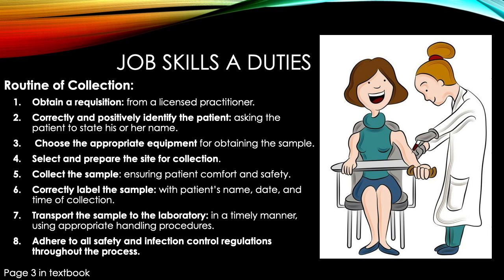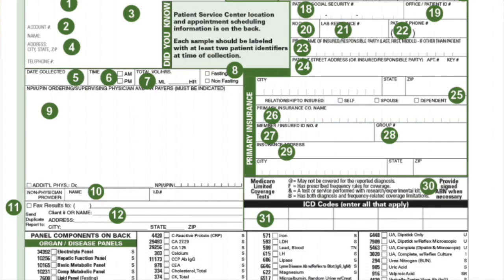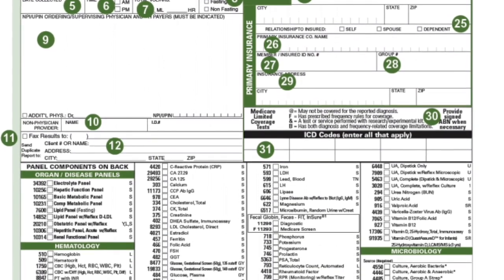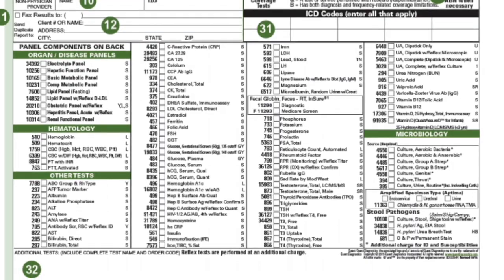A requisition form comes from the doctor or the charge nurse — it has to be an order from the doctor, but a charge nurse, either an LVN or an RN, can write it up. On the requisition it will let you know what you need to draw and what type of tube to use. If you're unsure about the type of tube, you can always call your lab — they are always a point of reference — so you don't draw too many tubes or take too much blood, and you can transport and process properly. Here's an example of a Quest Diagnostic requisition form, which we will get into later in another chapter.